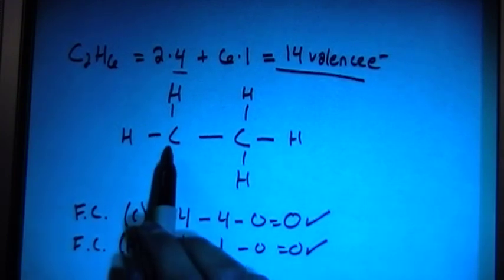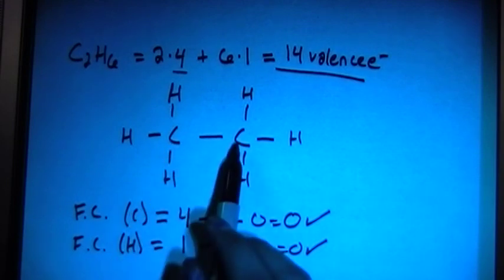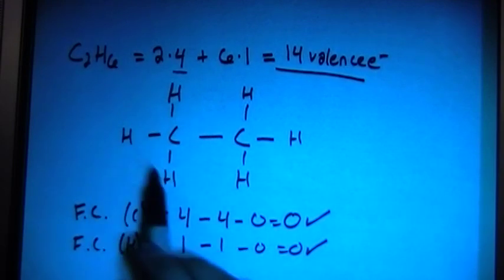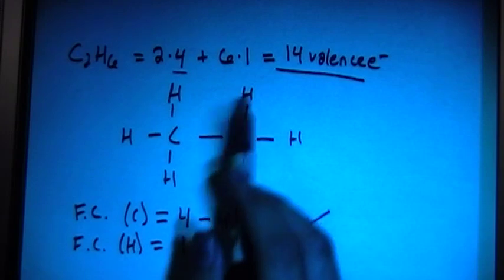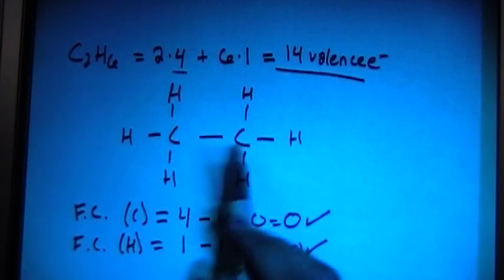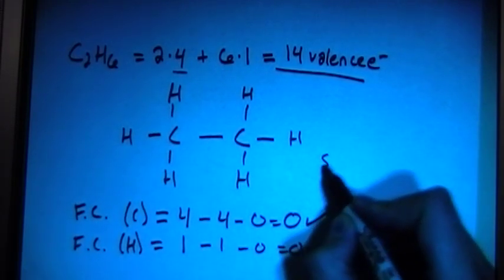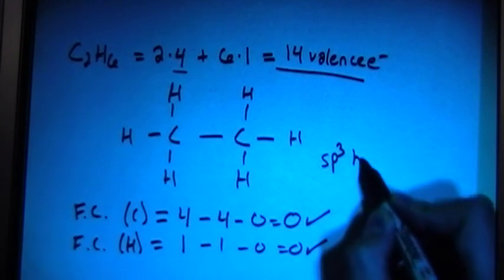But if you want to look at the hybridization for this carbon as well as this one, there's 1, 2, 3, 4 bonding sites for this one, and 1, 2, 3, 4 bonding sites for this one. So both of these carbons have four bonding sites, so that's going to be sp3 hybrid.